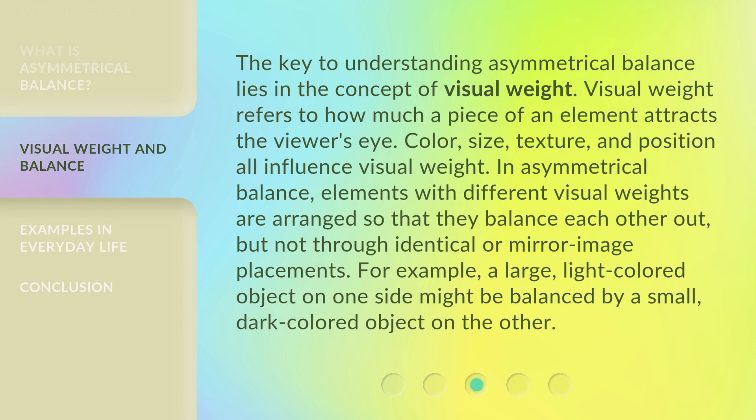The key to understanding asymmetrical balance lies in the concept of visual weight. Visual weight refers to how much a piece of an element attracts the viewer's eye. Color, size, texture, and position all influence visual weight. In asymmetrical balance, elements with different visual weights are arranged so that they balance each other out, but not through identical or mirror image placements. For example, a large, light-colored object on one side might be balanced by a small, dark-colored object on the other.